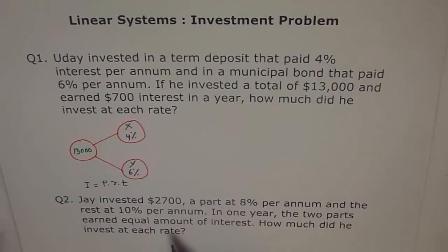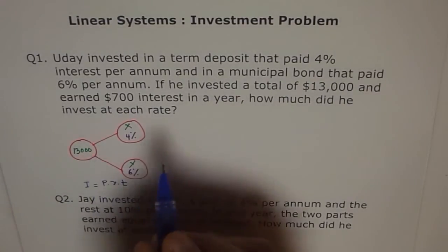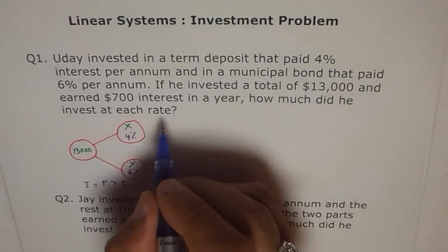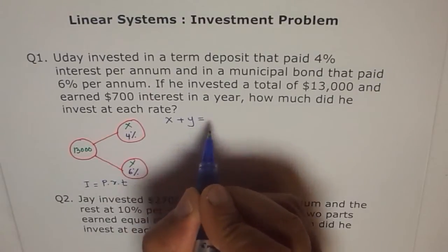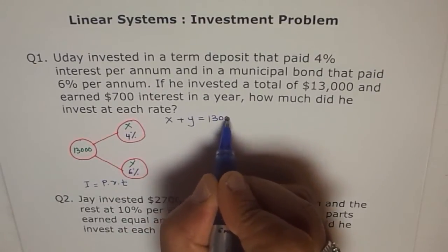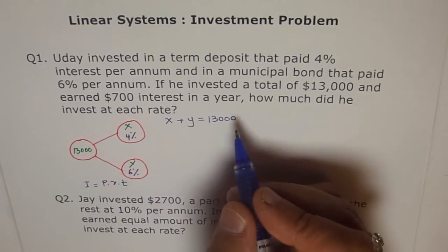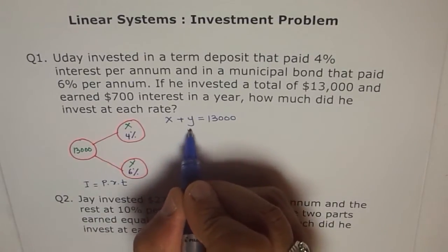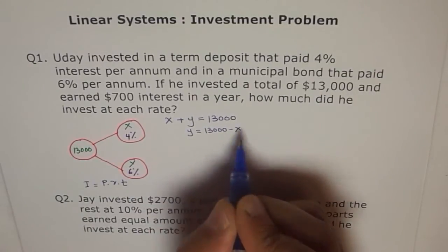Now, let's try to write our equations. Equation number 1. The total amount was $13,000. And he invested X and Y. So, X plus Y should be $13,000. So, that's our first equation. We say X plus Y equals to $13,000. And how do we use this equation? Convert one variable into other. So, we will convert that. And we can write here, Y equals to $13,000 minus X.